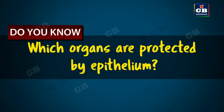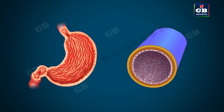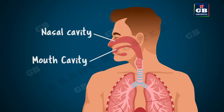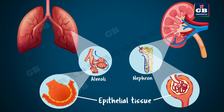Do you know which organs in our body are protected by epithelium? Almost all organs and their inner cavities are covered by epithelium. The outer as well as inner surface of organs like stomach and blood vessels are covered by epithelium. Cavities like mouth cavity and nasal cavity are also covered or lined by epithelium. The alveoli of lungs and renal tubules of kidneys are made up of epithelial tissue.